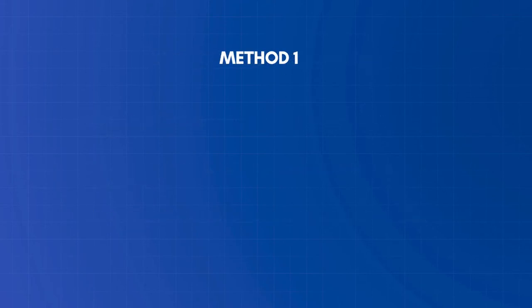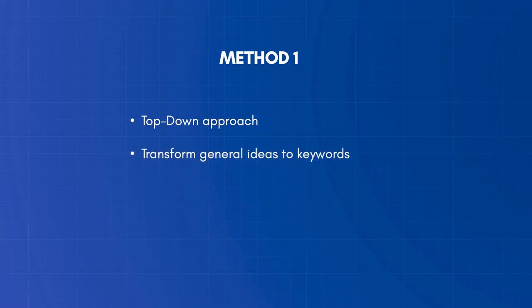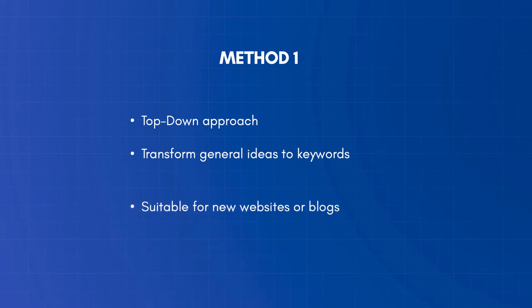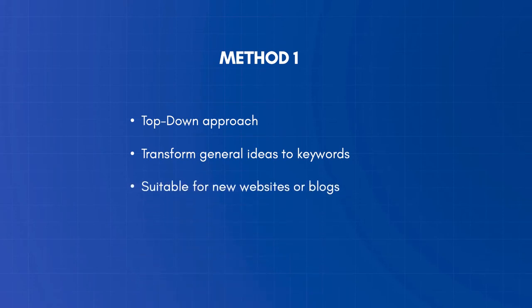The first method is to follow the top-down approach. Using this method, you think of general topics that might be relevant to your business. Then, using different techniques, you can identify which keywords to use in your campaigns. This is more suitable for new websites or blogs that don't have a lot of content.